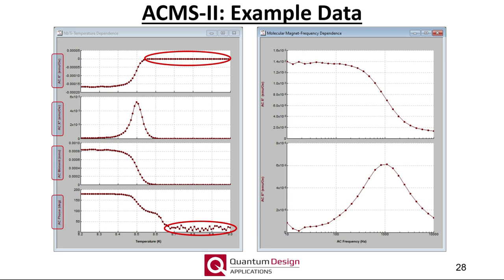The second data set is of a molecular magnet sample measured at 50 Kelvin and at zero DC field. The AC drive field was fixed at an amplitude of 4 Oe, and the frequency was increased over the available range offered by the ACMS2. This particular sample was highly air-sensitive and was therefore sealed in a quartz ampule within a glove box and then mounted inside a clear drinking straw. I have only plotted the real and imaginary components as a function of the AC drive frequency, as is usually done for these types of samples, with the curves best viewed using log spacing along the x-axis.